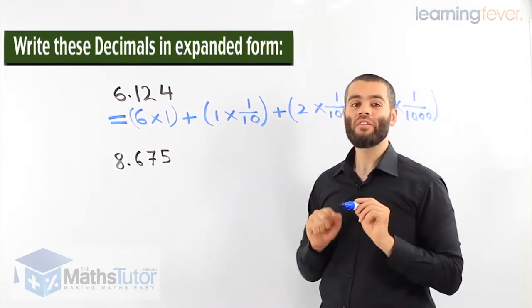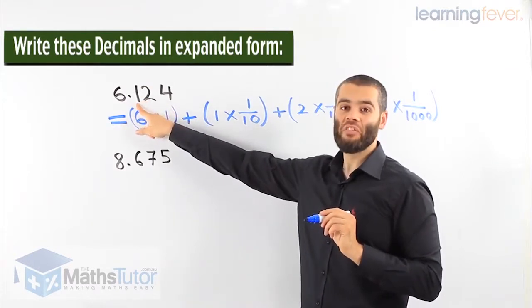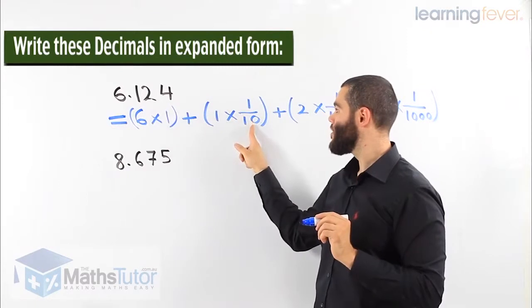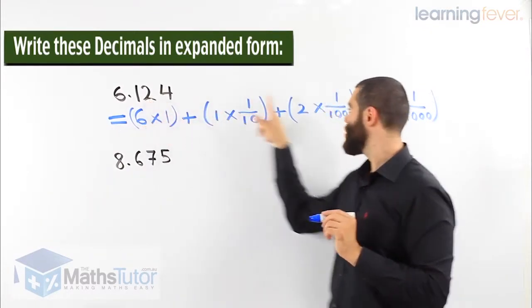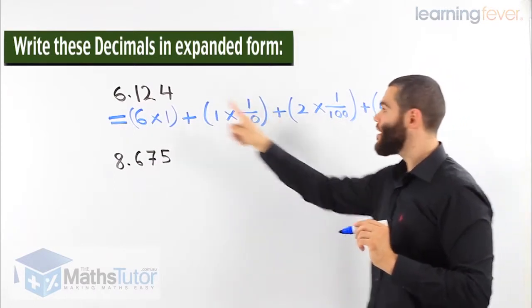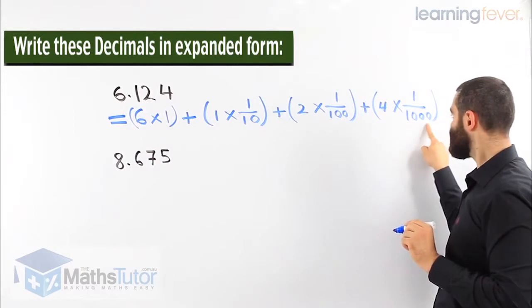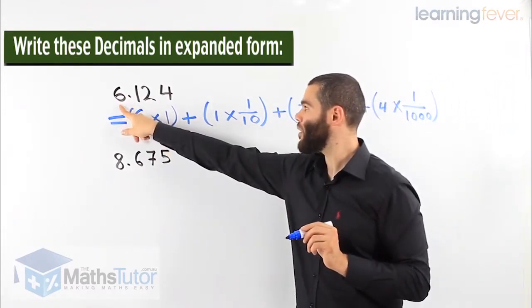I always tell my students an easy way to quickly notice what they are. The first number after the decimal point will have one zero. The second number after the decimal point will have two zeros. And the third number after the decimal point will have three zeros.